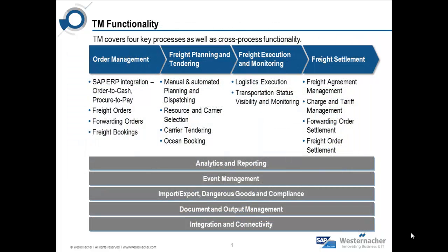Transportation management has been built around four core business processes. The first one is order management, which has out-of-the-box ERP integration in terms of order to cash and procure to pay, with freight settlement, so there is ERP billing and invoicing. Order management also covers forward orders, freight orders, and booking orders, therefore covering land, sea, and air transportation.